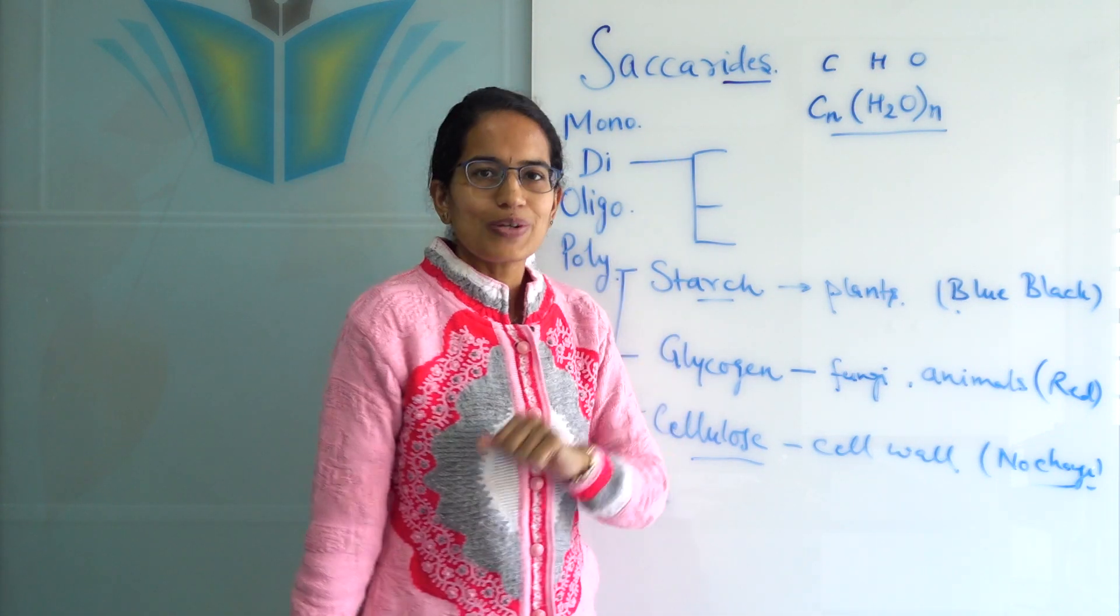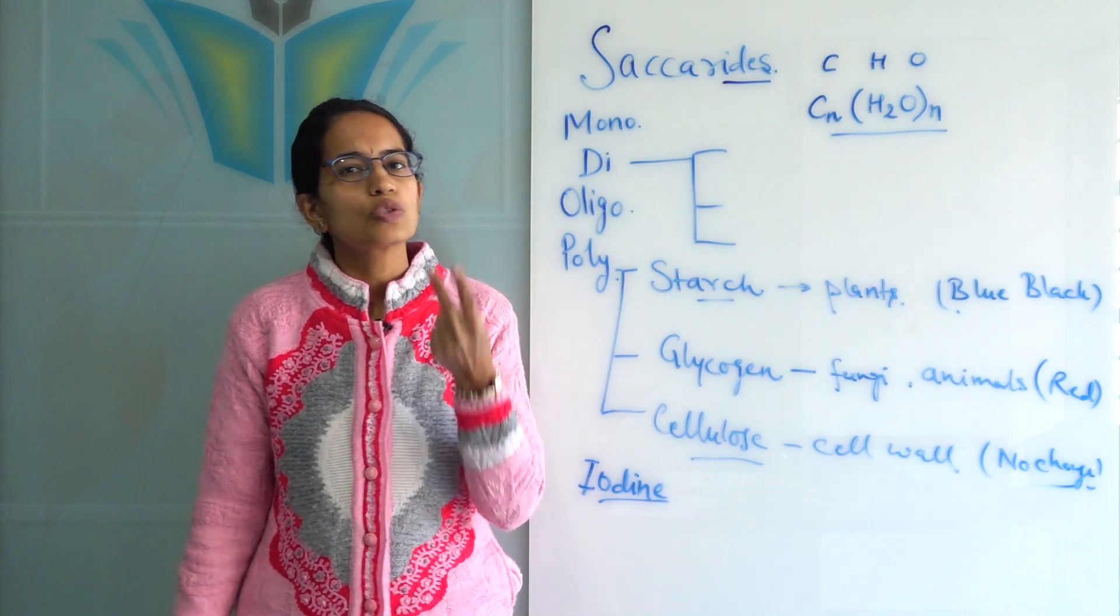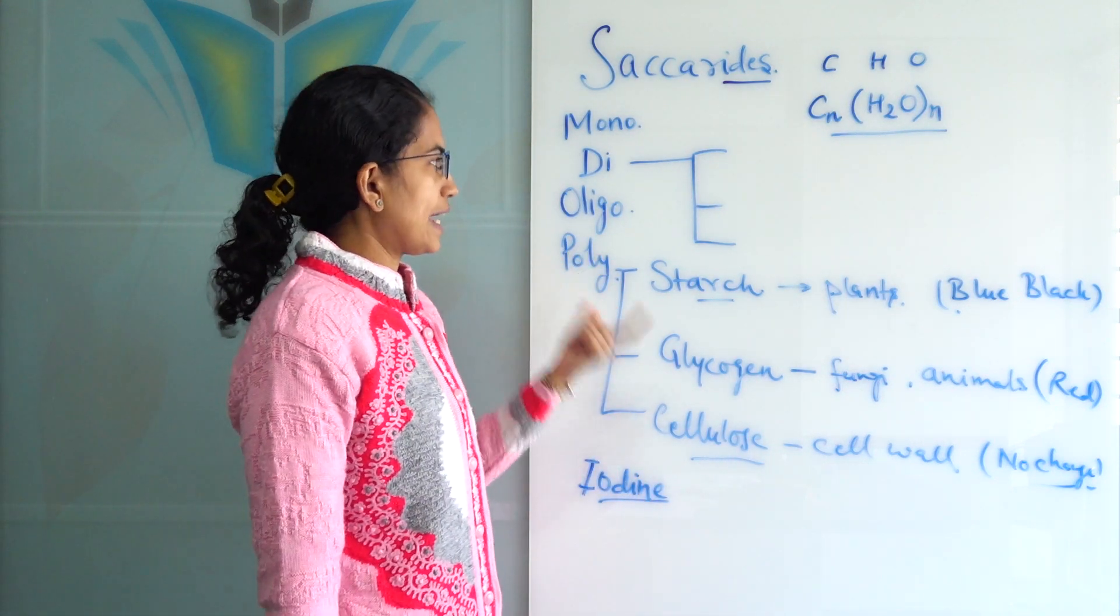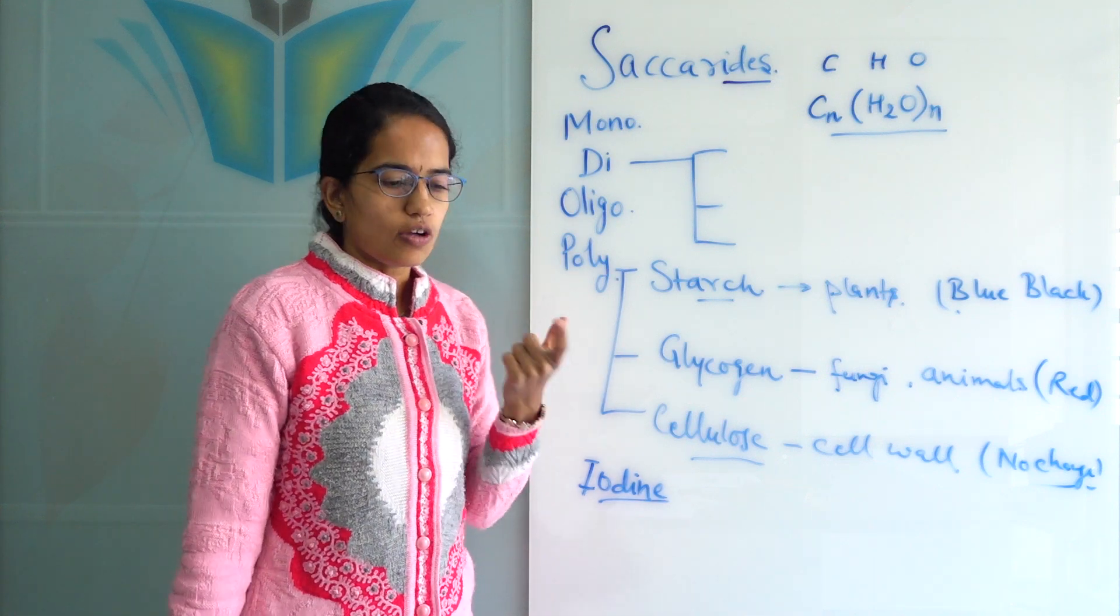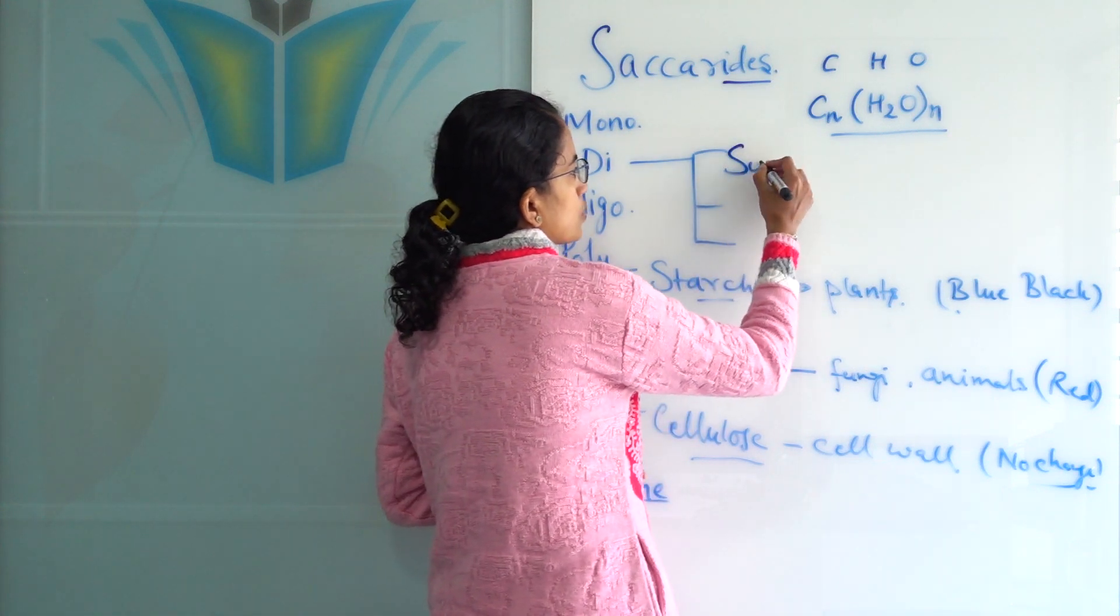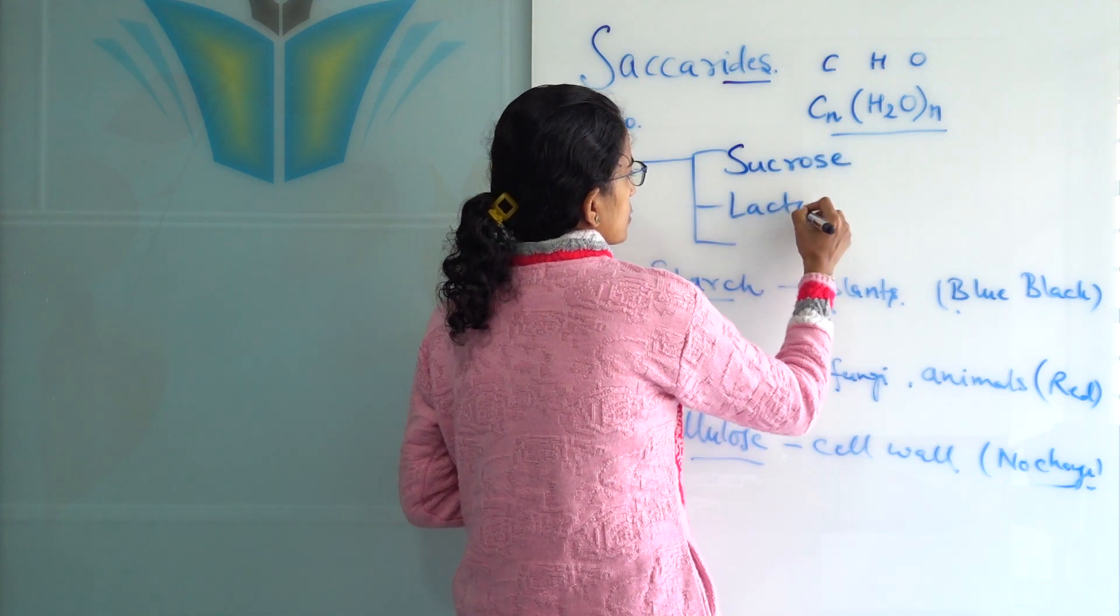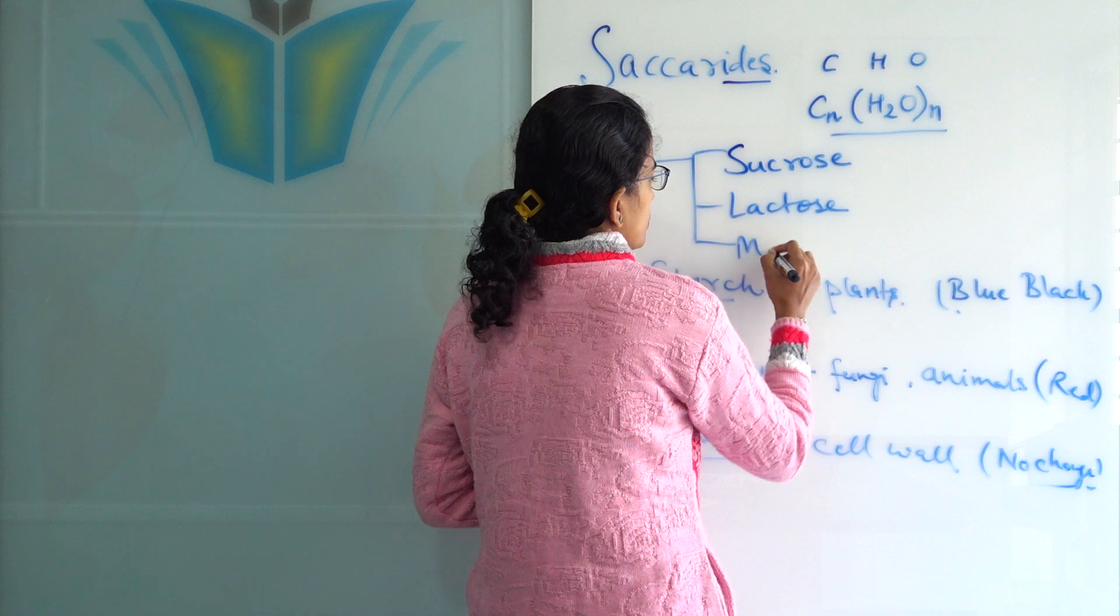Now, let's talk about disaccharides. As we mentioned, two simple units of carbohydrate, if come together, they form disaccharides. So, what are the common disaccharides? Common disaccharides are sucrose, lactose and maltose.